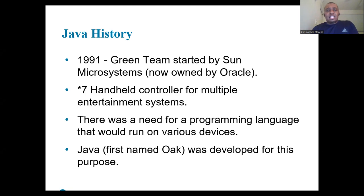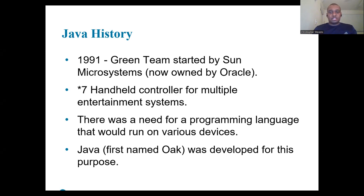In 1991, a team of engineers at Sun Microsystems known as the Green Team embarked on an ambitious project. Their goal was to develop a handheld controller for multiple entertainment systems. This endeavor required a new programming language that could run on various devices, and thus Oak was born, which later became known as Java.